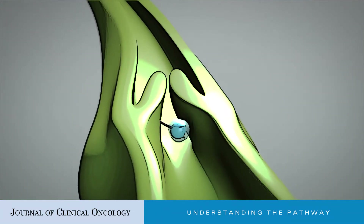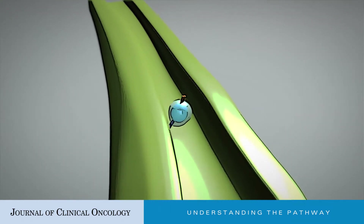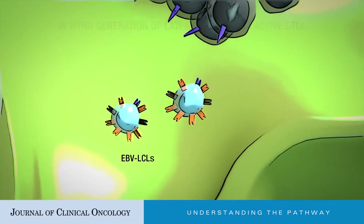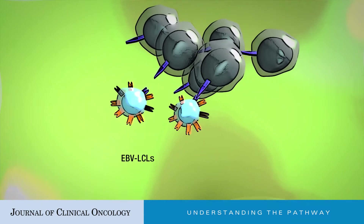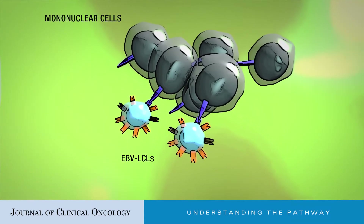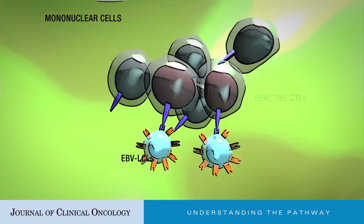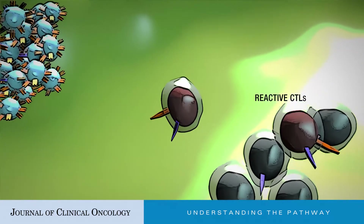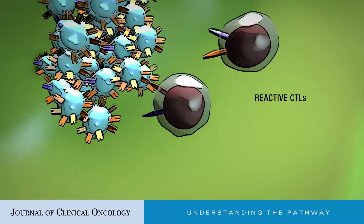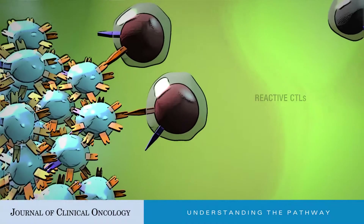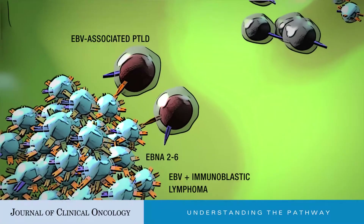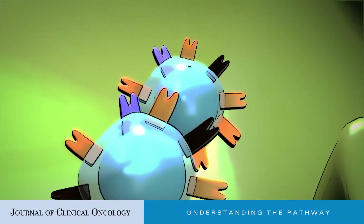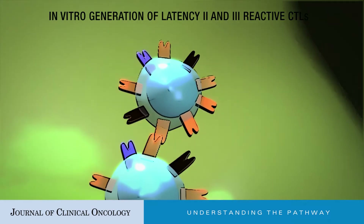Decrease in number and immunogenicity of EBV antigens enables viral persistence. EBV-specific cytotoxic T cell lines were originally generated by exposure to EBV-transformed lymphoblastoid cell lines expressing latency 3. The resulting polyclonal cells are primarily directed against the immunogenic EBNA-3 proteins and recognize only malignancies expressing latency 3, such as post-transplantation lymphoproliferative disorders and immunoblastic lymphomas seen primarily in immunocompromised individuals.